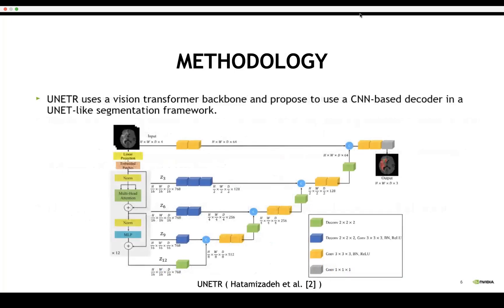In UNETR, we connect the transformer encoder to a CNN-based decoder at multiple resolutions by using skip connections. Essentially, the idea here is to utilize a CNN-based decoder to process extracted features at these different resolutions to output the final segmentation mask.